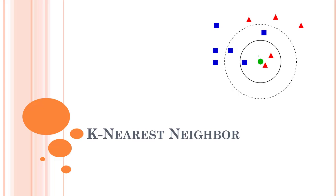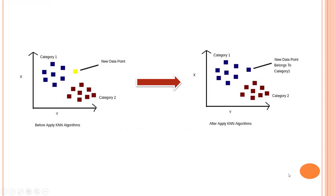Hi everyone, welcome back to this fresh new section on classification algorithms. In this section we are going to learn a fairly new algorithm which is known as K-Nearest Neighbor. K-Nearest Neighbor is one of the simplest machine learning algorithms based on supervised learning techniques. Let's get started with K-Nearest Neighbor.